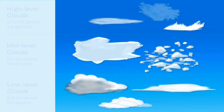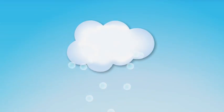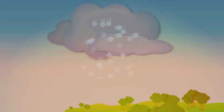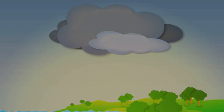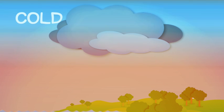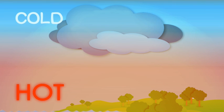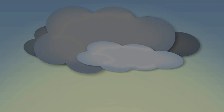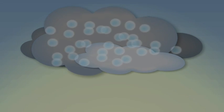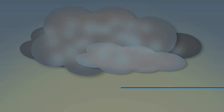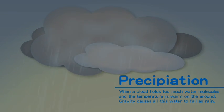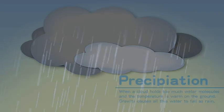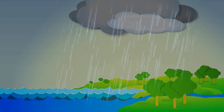However, clouds do not exist forever. When a cloud holds too many water molecules and the temperature is warm on the ground, cloud tops will be cooler than the lower regions. Water molecules will become liquid again, and gravity causes all this water to fall as raindrops.